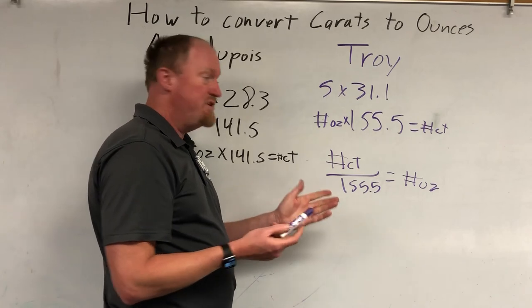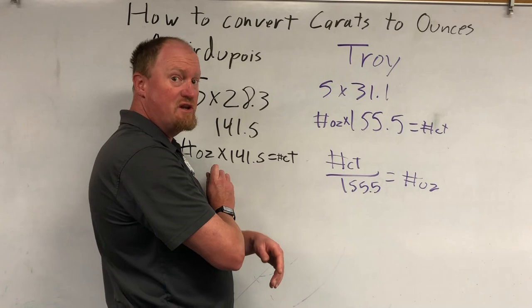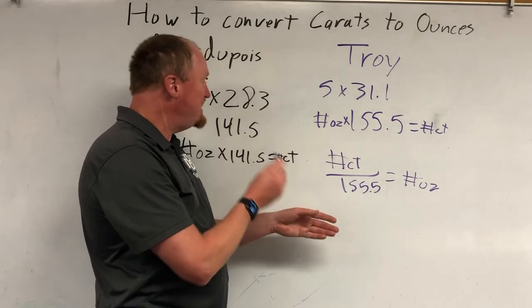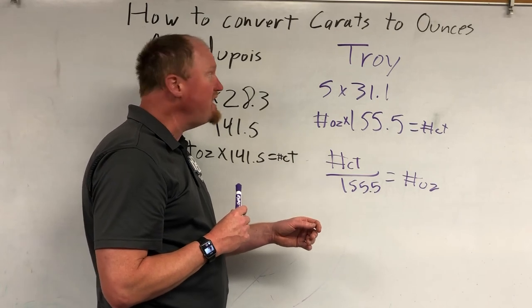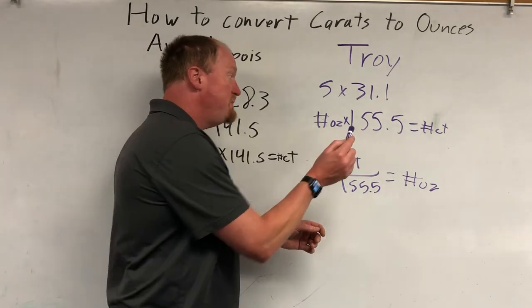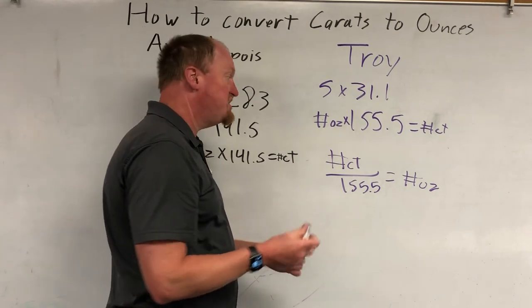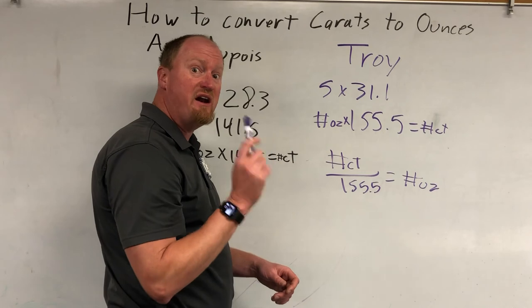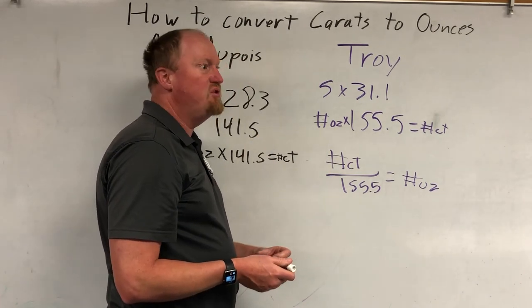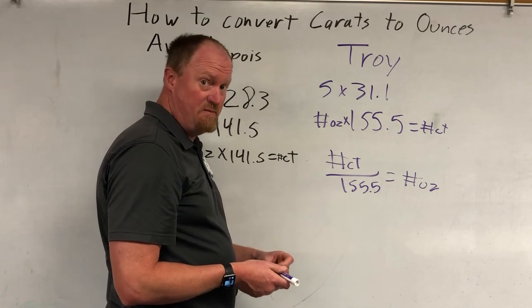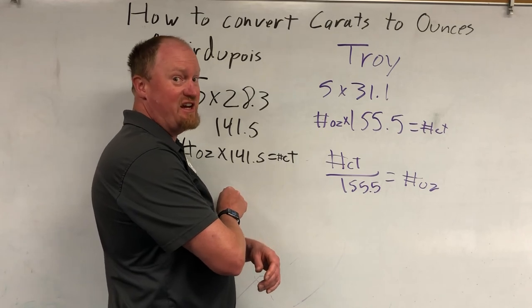Now, by the way, this is troy ounces; this is your standard avoirdupois potato chip ounces. Well, what if it doesn't say it's troy ounces? Does that mean it's avoirdupois? No. Any kind of precious metals, any kind of gems are gonna be in troy ounces, even if they don't say they're in troy ounces. This is just standard practice — when somebody talks about an ounce of gold, they're talking about a troy ounce. If you're not sure, ask. Somebody might try to sell you an avoirdupois ounce at a discount.